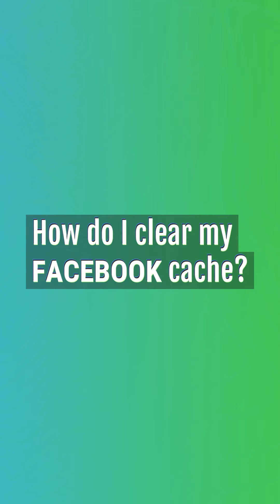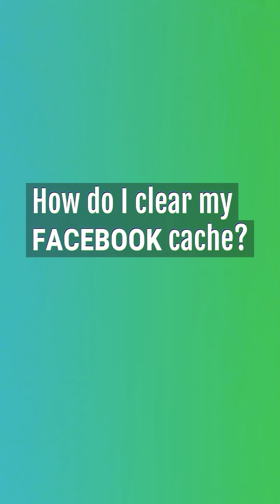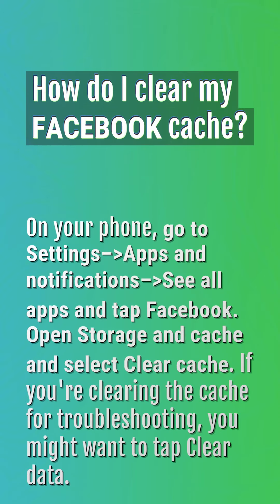How do I clear my Facebook cache? On your phone, go to Settings, then Apps and Notifications, see all apps, and tap Facebook. Open Storage and Cache and select Clear Cache. If you're clearing the cache for troubleshooting, you might want to tap Clear Data.